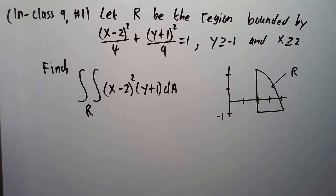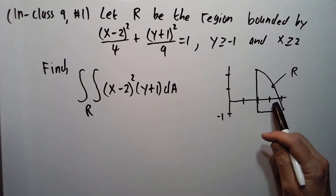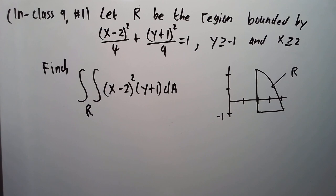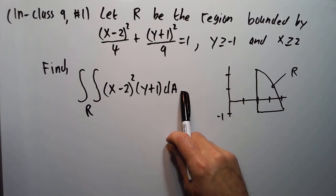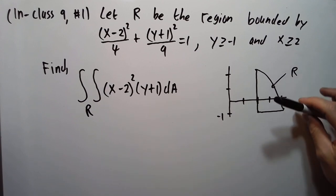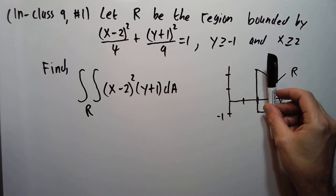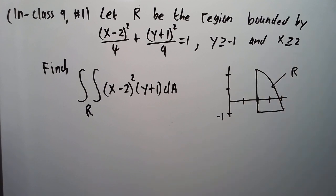Let R be the region bounded by (x−2)²/4 + (y+1)²/9 = 1, with y ≥ −1 and x ≥ 2. We define a double integral over this region. This is the same question we did in In-Class 8, where we found the answer was 24/5, computed two different ways. Here we're going to do the same question but change variables to simplify the region.